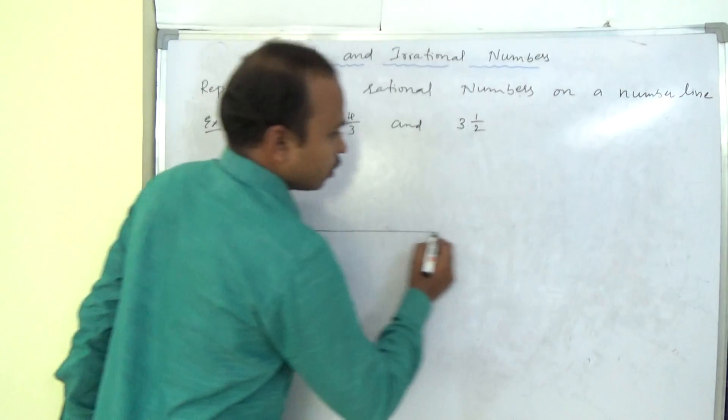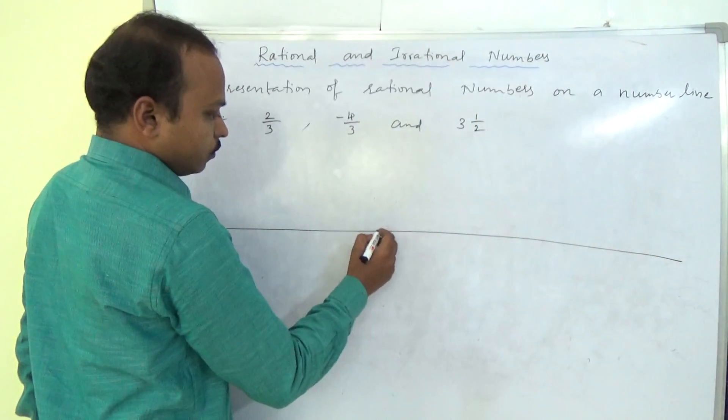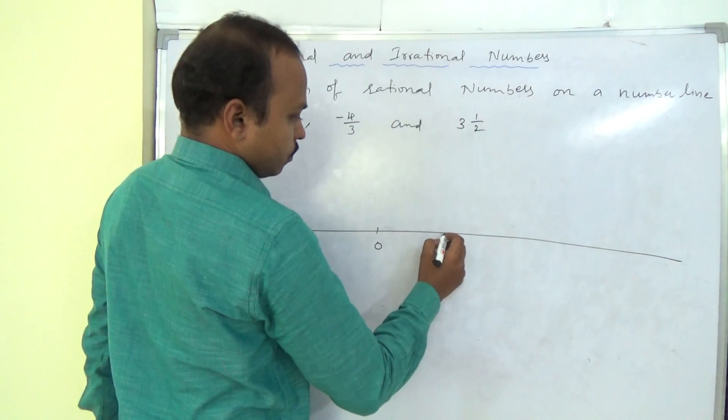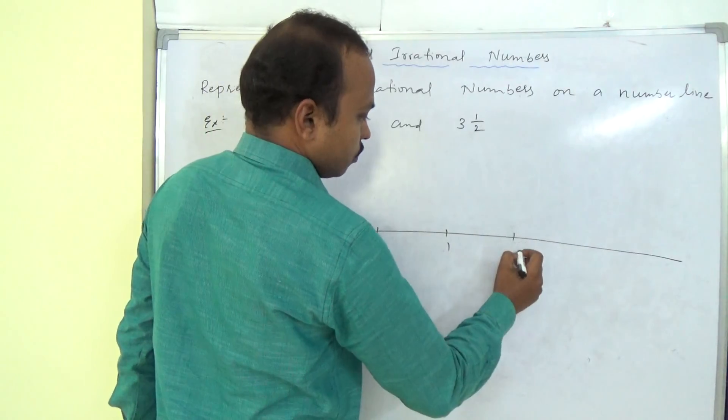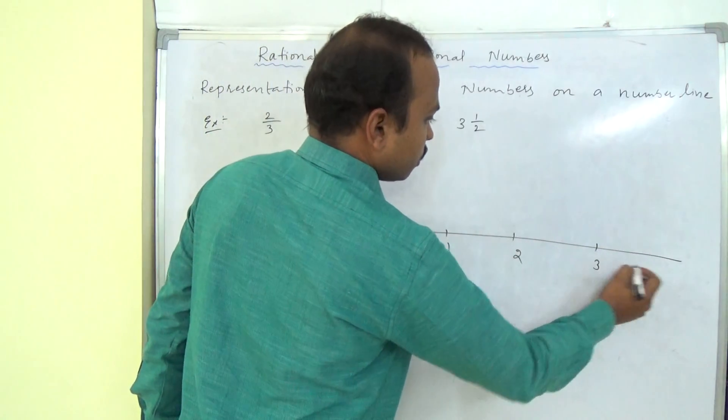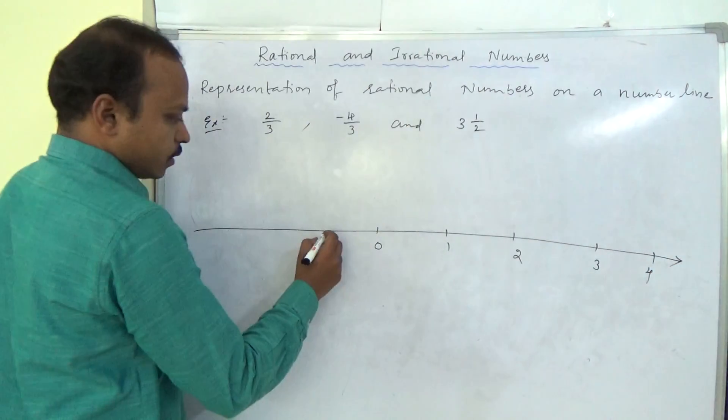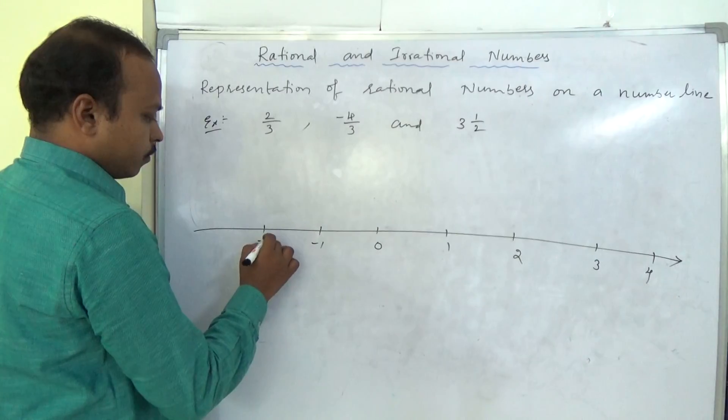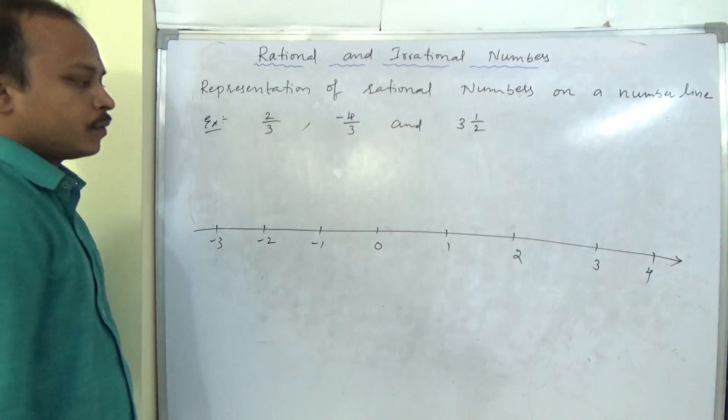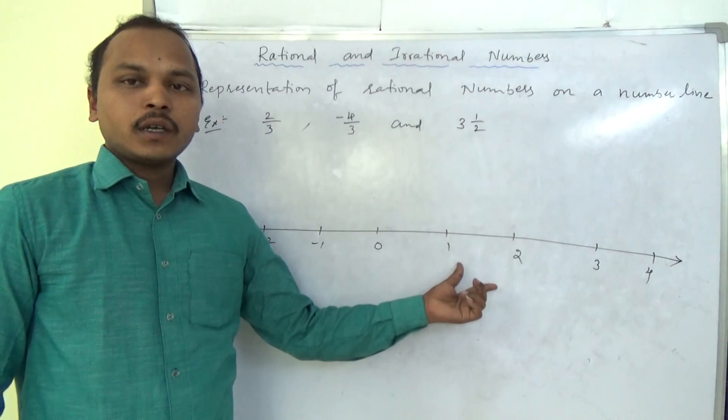To represent these three numbers on a number line, first you will see the number line, 0, 1, 2, 3 and so on. 4. This side is as it is negative 1, negative 2, negative 3. So with equal distance, the numbers are there.